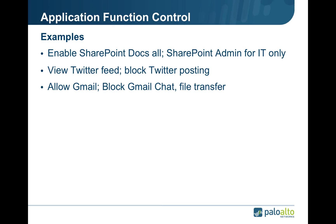Employees want to be able to use whatever application they desire in order to get their jobs done, yet security administrators need them to be able to do that in a secure and protected manner. Examples of application function control might be to enable SharePoint documents for all users while allowing only SharePoint administration for IT or support. Another example is to view Twitter yet block the ability to post. And finally, allow Gmail yet block the Gmail chat and file transfer functions.